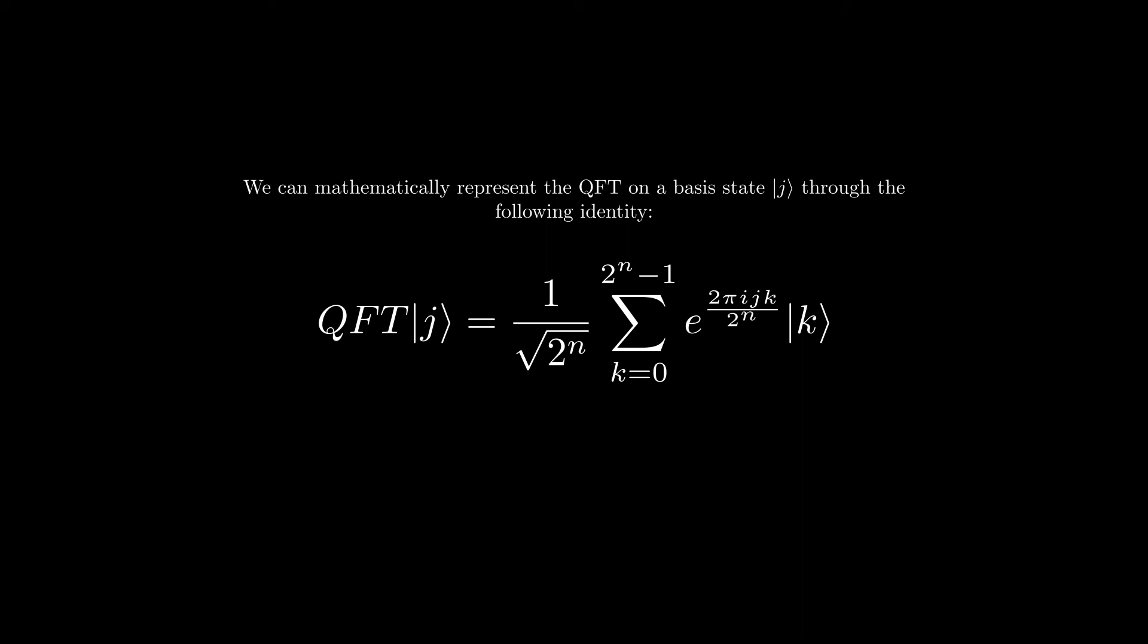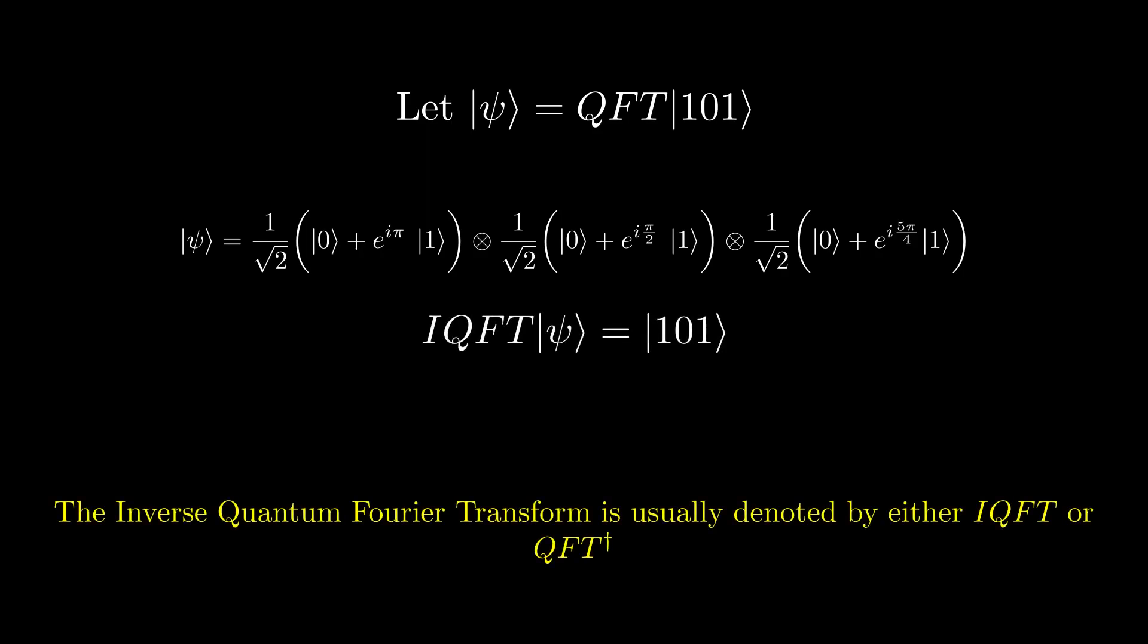We also have the inverse quantum Fourier transform, and that undoes the quantum Fourier transform. So if we add this state, which is the state where we encoded 5 using the quantum Fourier transform, if we now apply the inverse quantum Fourier transform, we get back to our state 101.